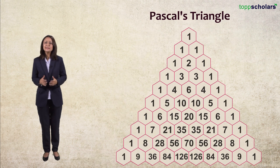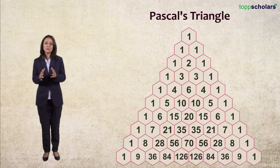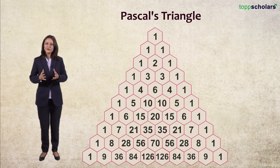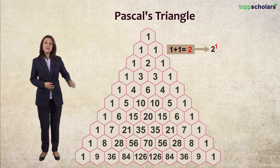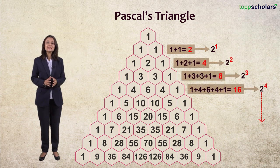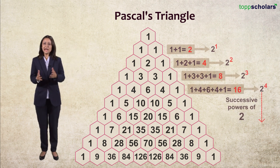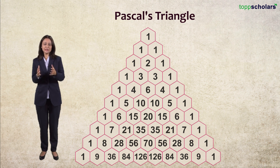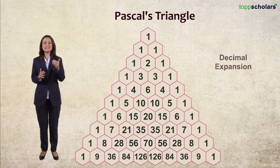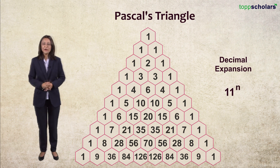Not only this, there are many hidden secrets and surprises inside Pascal's Triangle. For example, if we add up the numbers of each row, we get successive powers of 2. Now, if we consider each number in a particular row to be part of a decimal expansion, we get the powers of 11.